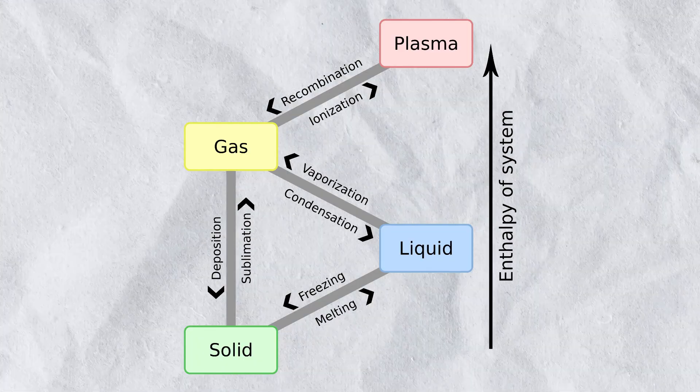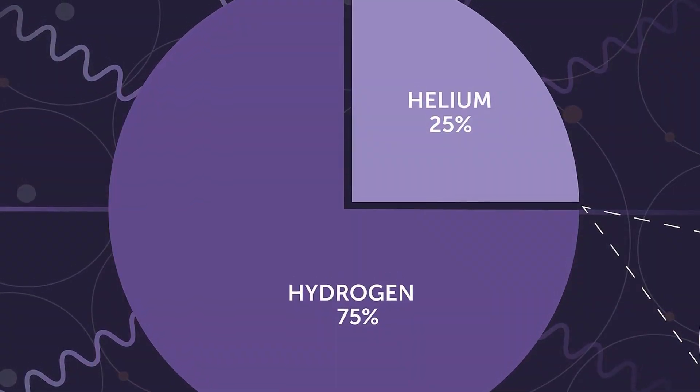Heating gaseous helium enough will give you plasma, the fourth state of matter. In fact, the sun is made up of hydrogen and helium plasma, fused together under immense pressure and heat.